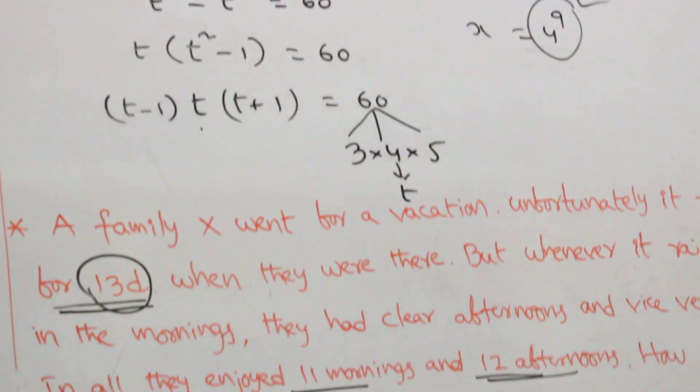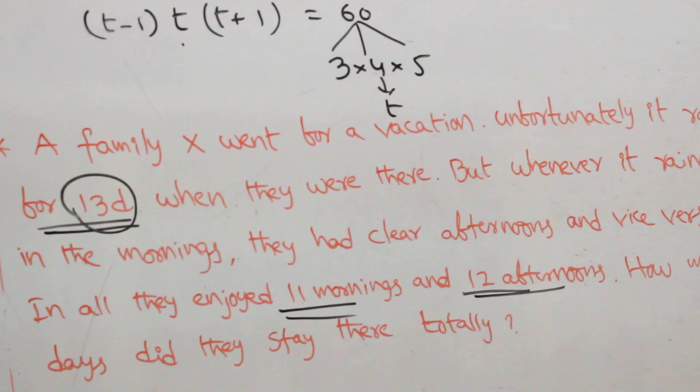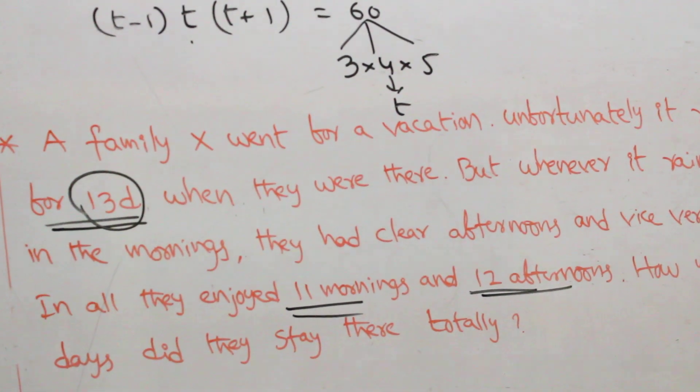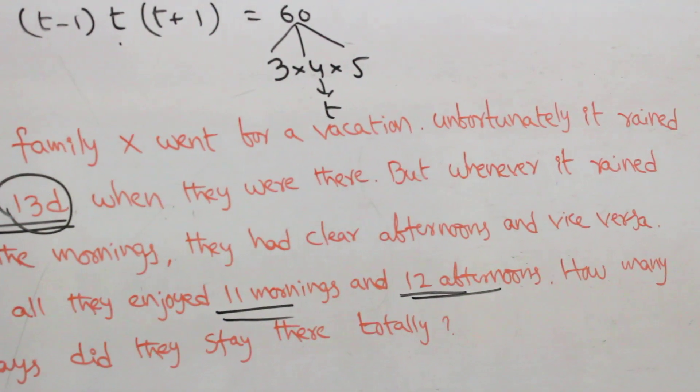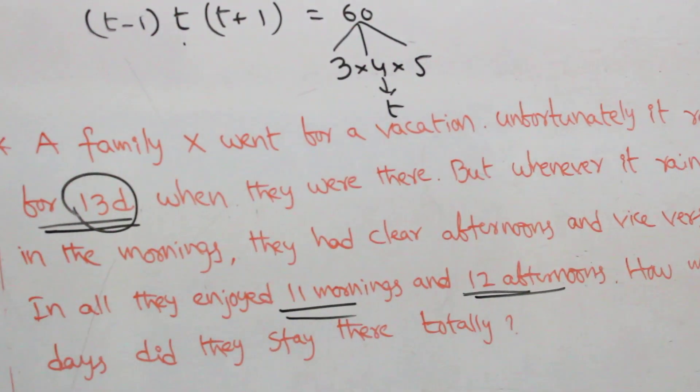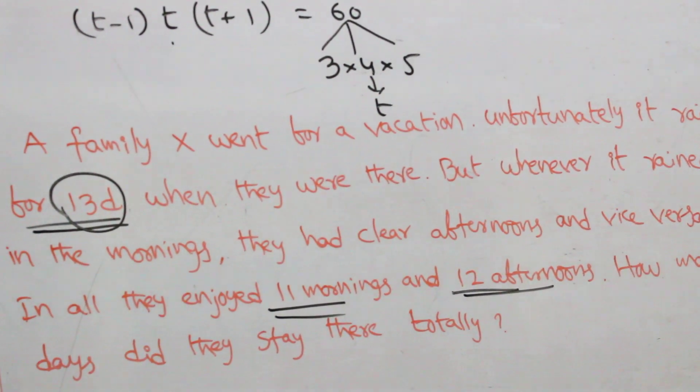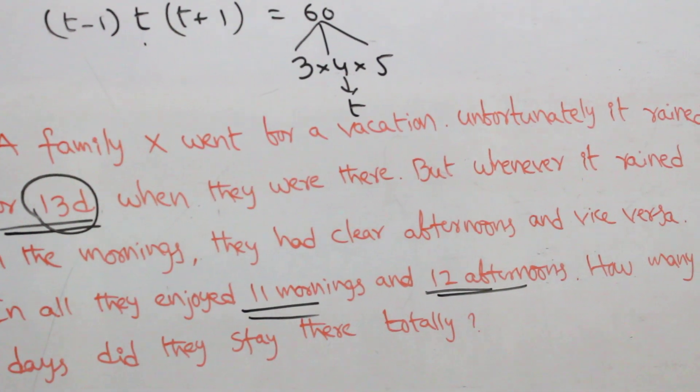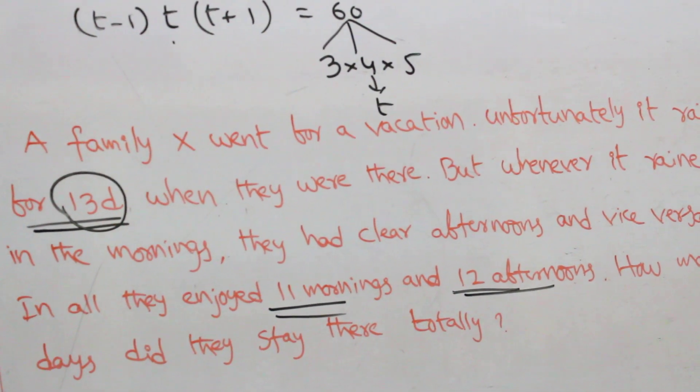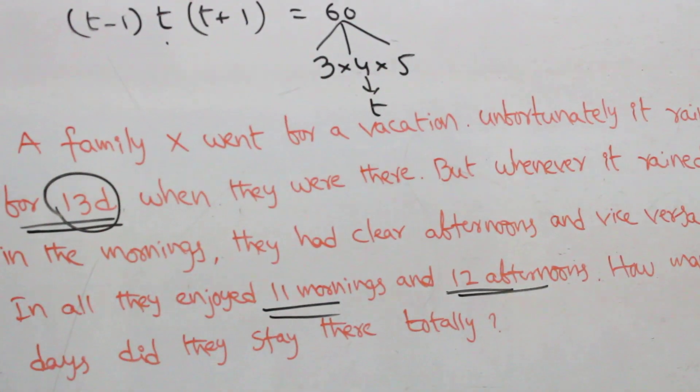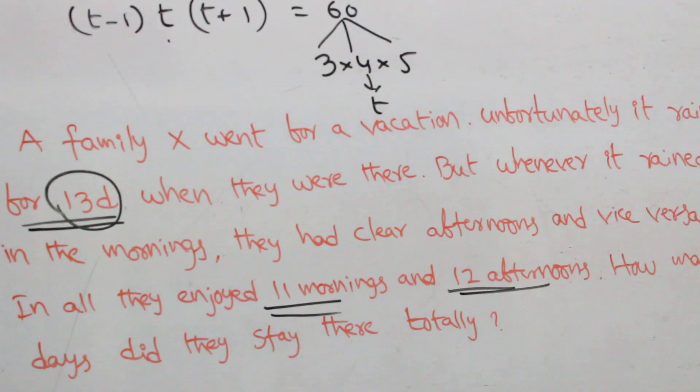Next question. A family X went for a vacation. Unfortunately, it rained for 13 days when they were there. But whenever it rained in the mornings, they have clear afternoons and vice versa. In all, they enjoyed 11 mornings and 12 afternoons. How many days did they stay there totally?